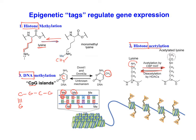We can talk in another video about how the modification of histones affects gene expression. Suffice it to say here that acetylation of histones leads to active transcription — acetylation is active. This is going to open up the DNA structure and allow transcription to occur. Methylation, on the other hand, equals maybe. Some histone methylations lead to open and active transcription, while some methylations of the histones lead to closure of the DNA and inhibition of transcription.